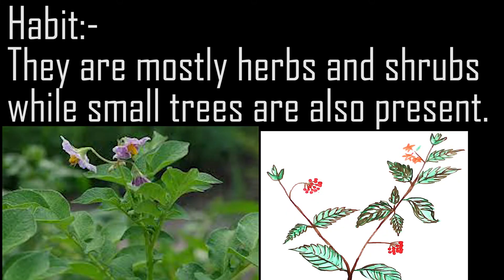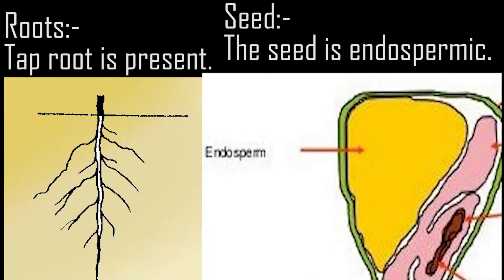Habit: They are mostly herbs and shrubs, while small trees are also present. Roots: Taproot is present. Seed: The seed is endospermic.